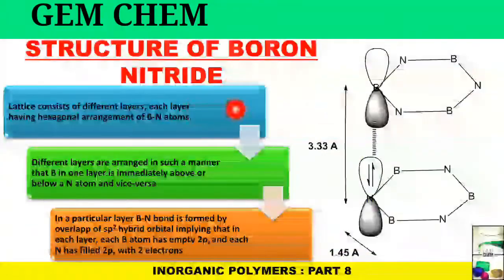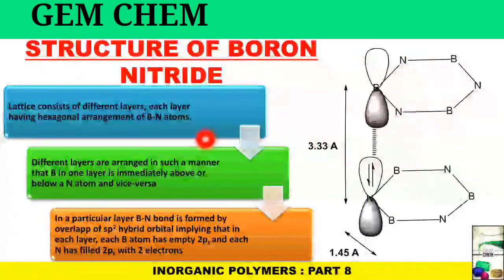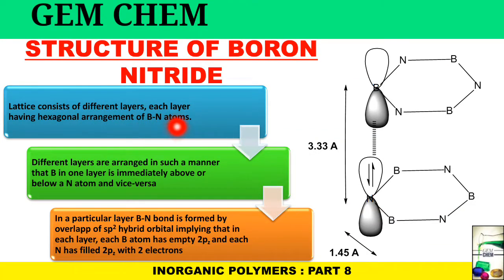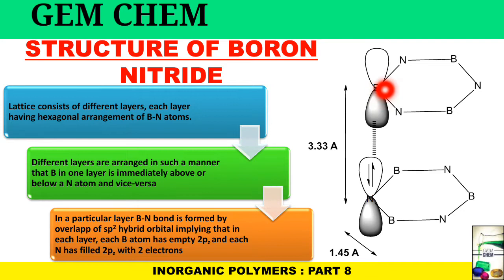The structure of boron nitride consists of different layers, each layer having a hexagonal arrangement of boron and nitrogen atoms, with alternate boron and nitrogen in the hexagonal arrangement. Different layers are arranged such that boron in one layer is immediately above or below a nitrogen atom, and vice versa — so in adjacent layers, there will be one nitrogen above and one nitrogen below each boron.